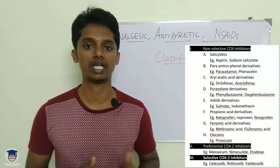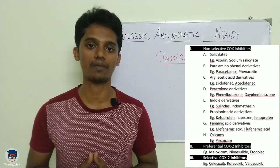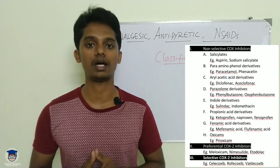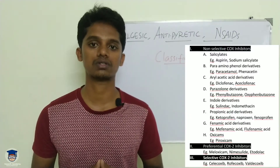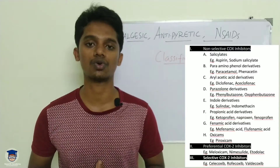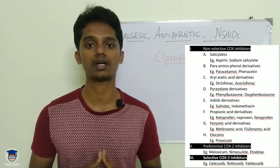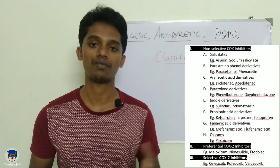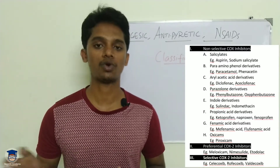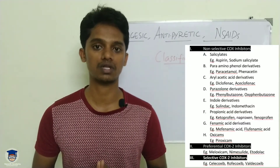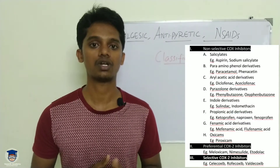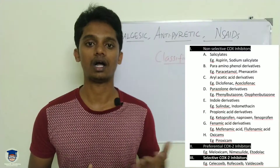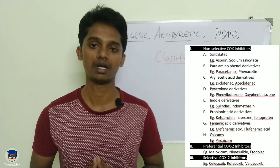Under non-selective COX inhibitors, there are many drug types. Salicylates include aspirin and sodium salicylate. Paracetamol is a para-aminophenol derivative. Diclofenac belongs to acylphenyl acetic acid derivatives. Pyrazolone derivatives include oxyphenbutazone and phenylbutazone. Indole derivatives include indomethacin and sulindac. Propionic acid derivatives include ibuprofen, naproxen, flurbiprofen, and ketoprofen. Fenamate derivatives include mefenamic acid and flufenamic acid. Oxicams include piroxicam and meloxicam.